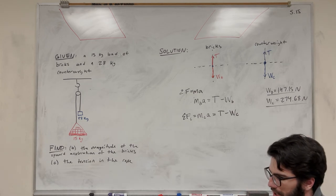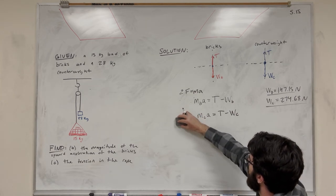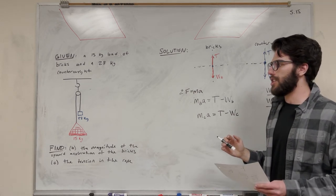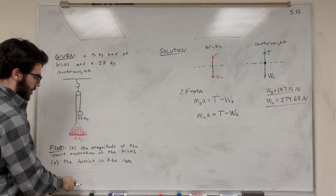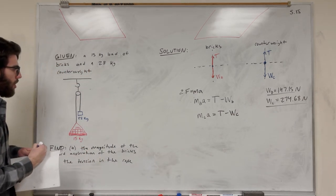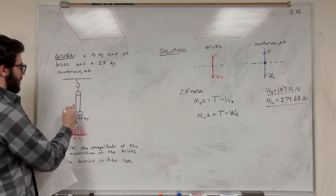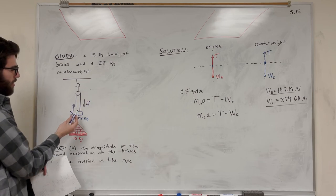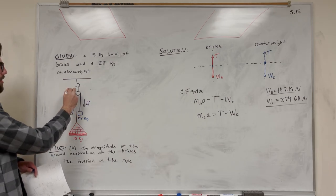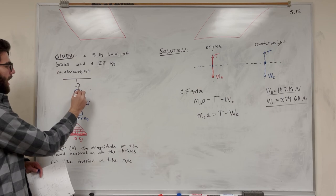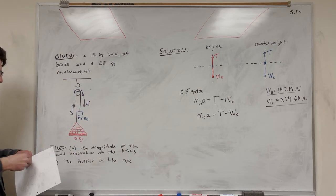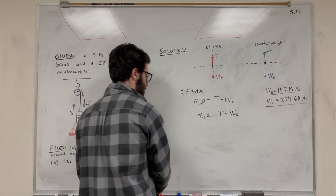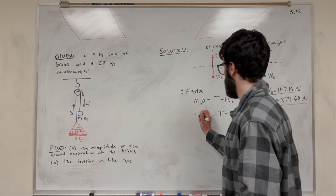Before moving on, we need to address the sign of acceleration. We're choosing one direction as positive. Looking at the pulley, acceleration points upward for the bricks but downward for the counterweight — it curves over the pulley. So if acceleration is positive for the bricks, it must be negative for the counterweight. We need to include that negative sign in the counterweight equation.